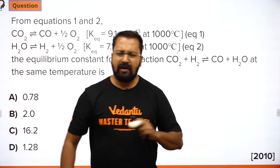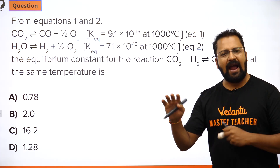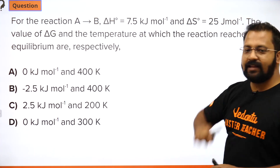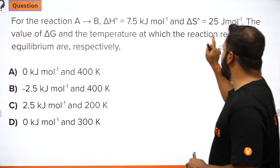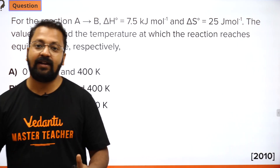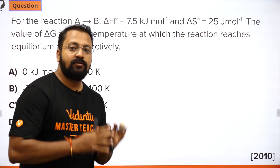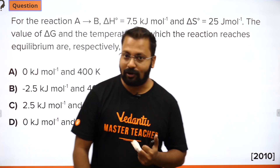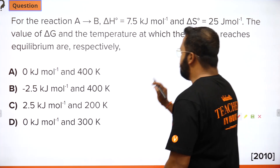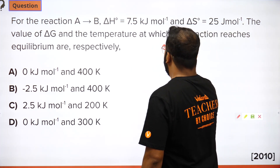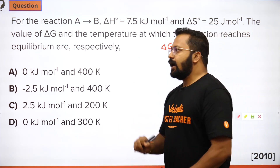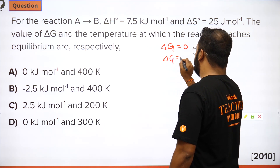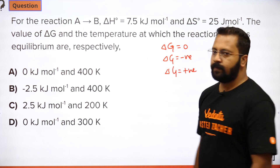Next question: for the reaction A → B, ΔH° = 7.5 kJ/mol and ΔS° = 25 J/mol·K. In thermodynamics it is very vital that you focus on units, because a minor change in units can change the result by a large magnitude. We need to find ΔG and the temperature at which the reaction reaches equilibrium. Remember: ΔG represents the feasibility of a reaction. ΔG can be zero, negative, or positive. If it is zero, the system is at equilibrium. If negative, the reaction is spontaneous. If positive, it is non-spontaneous.